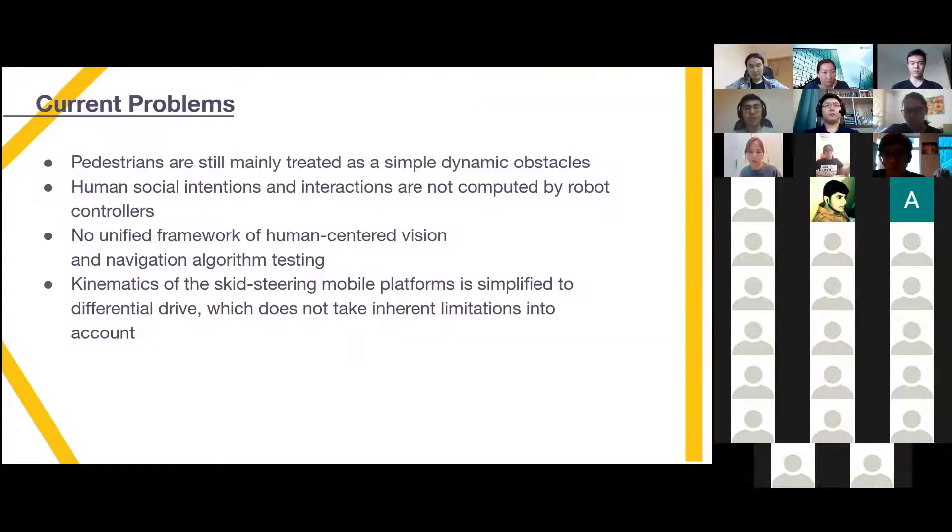In order to accomplish that, multiple problems need to be addressed first. Most of the current implementations of robot navigation systems, like the popular ROS navigation stack, still treat pedestrians as simple static obstacles. In addition, currently in most robot controllers, the human social intentions and their interactions are not computed by robot controllers.